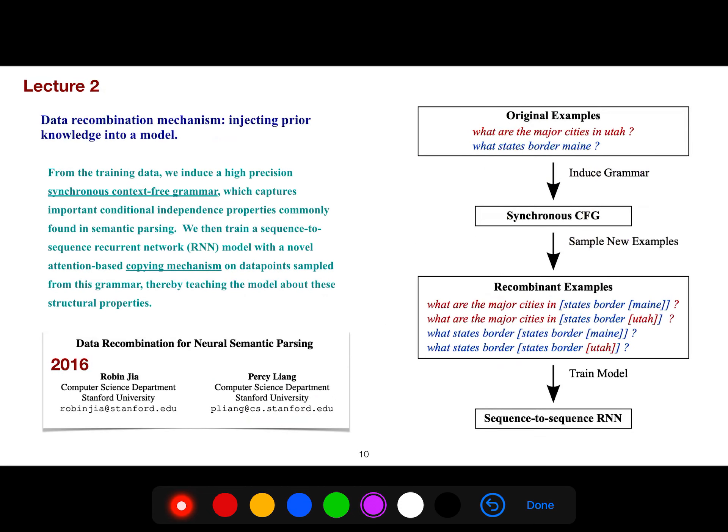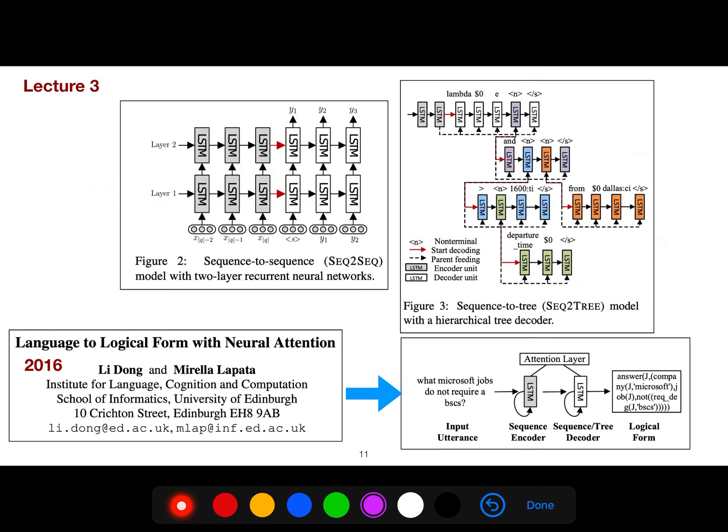In Lecture 2, another paper of Percy Leung uses a very good idea of recombinants. So everything is like sequence to sequence. You are translating a sequence to the meaning of that. But he is using recombinant idea to have better data.